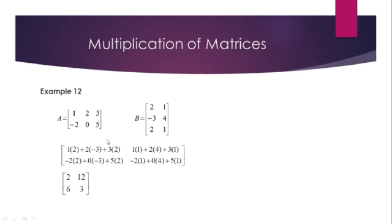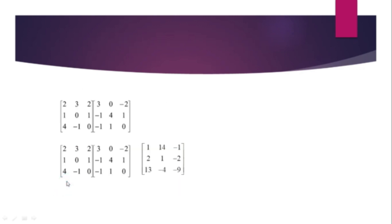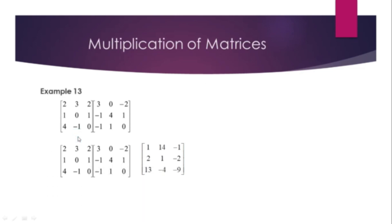Example 12: Let matrix A = [1, 2, 3 / -2, 0, 5] and matrix B = [2, 1 / -3, 4 / 2, 1]. AB equals matrix A times matrix B, giving entries including 2 and 12. Example 13 also demonstrates multiplication of 2 matrices, with the answer computed similarly.